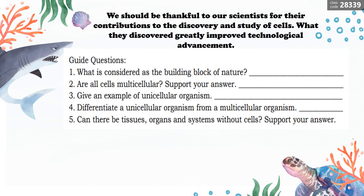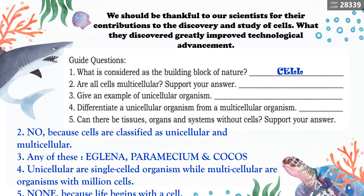There are multicellular and unicellular organisms. Organisms with only one cell are called unicellular, such as Paramecium, Euglena, and Coccus. Organisms with millions of cells are multicellular, like animals, plants, and fungi. Guide questions and answers: What is the building block of nature? — Cell. Are all cells multicellular? — No, because cells are classified as unicellular and multicellular. Examples of unicellular organisms: Euglena, Paramecium, or Coccus. Unicellular are single-celled organisms, while multicellular are organisms with millions of cells. Can there be tissues, organs, and systems without cells? — No, because life begins with a cell.